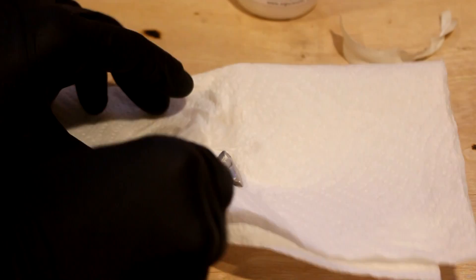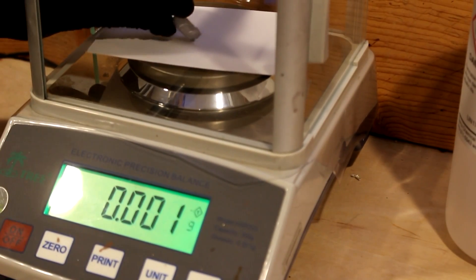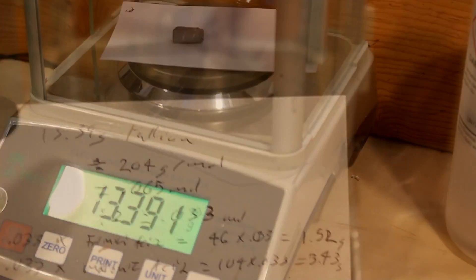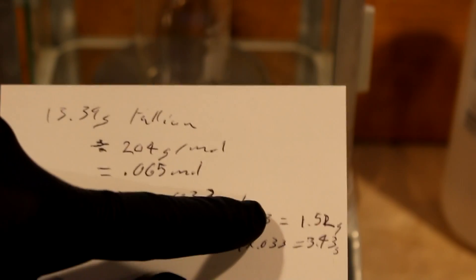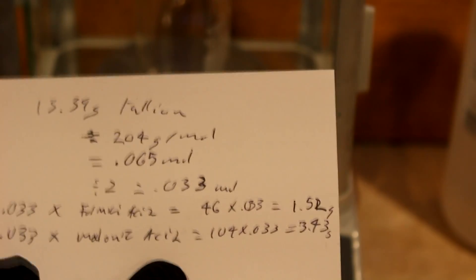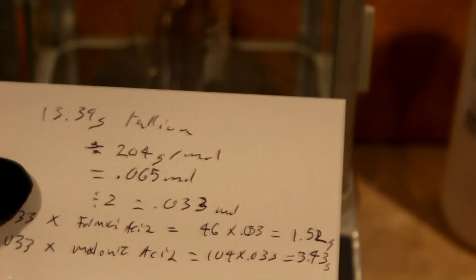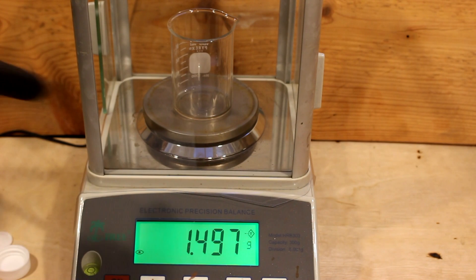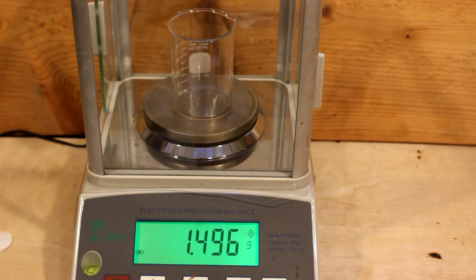Get all that mineral oil off of it so I know exactly how much I have. I've worked out that I need one and a half grams of formic acid and 3.4 grams of malonic acid. So let's weigh them out. I'm going to call that good. So there's our acids.